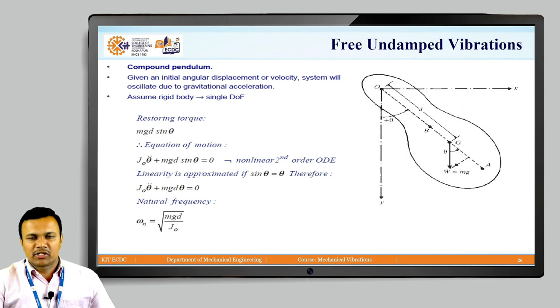If we calculate the restoring torque which is to be acting at the center of gravity, it will be weight force into the distance. The weight is mg into the distance, which will be d into sin theta. So the total restoring torque is given as mg d sin theta.